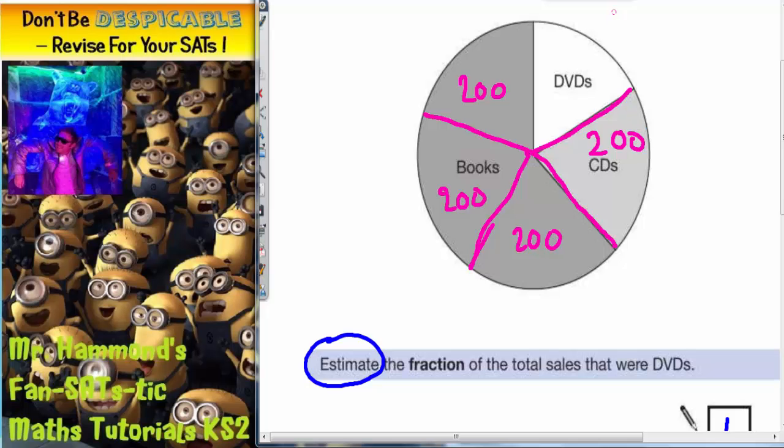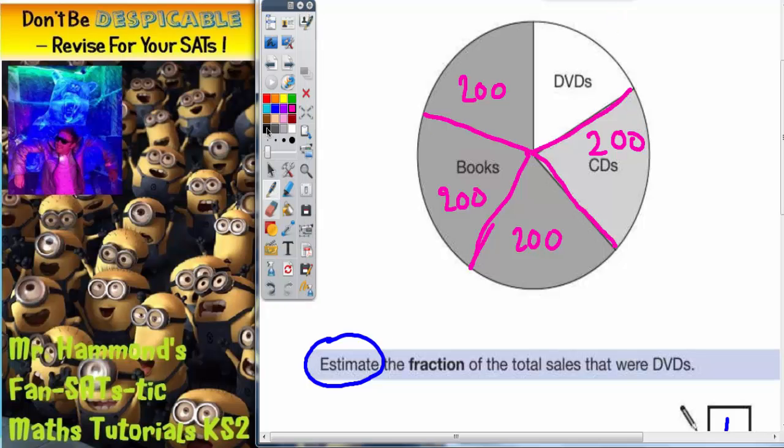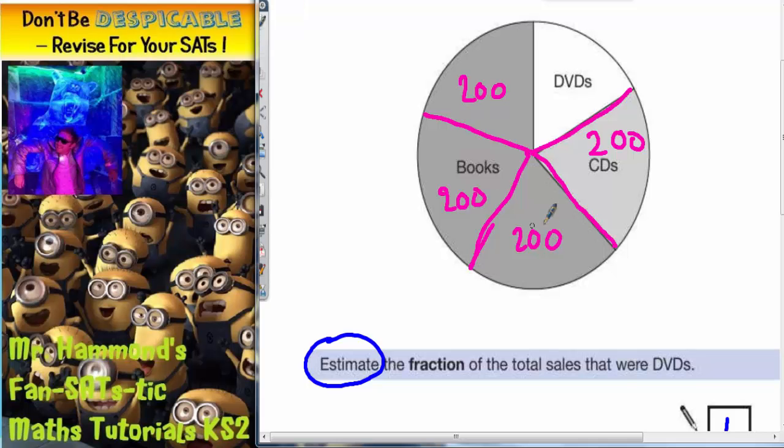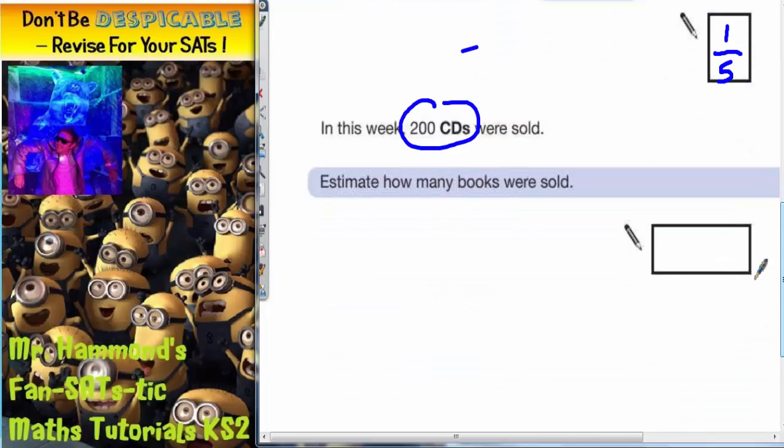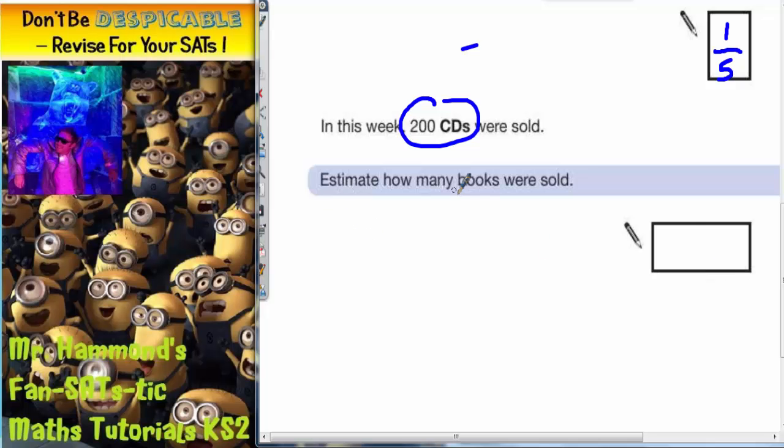So if CDs is 200, all I need to do now is count up my other sections. So I've got one lot of 200, a second lot of 200, a third lot of 200. So altogether, three lots of 200 are 600. So that, again, is an estimate. So my estimate for how many books were sold, I'm going to put 600.